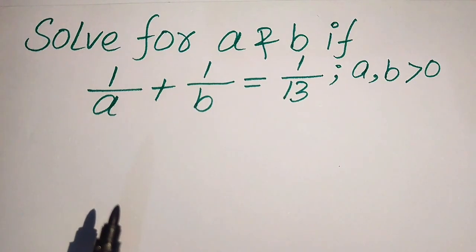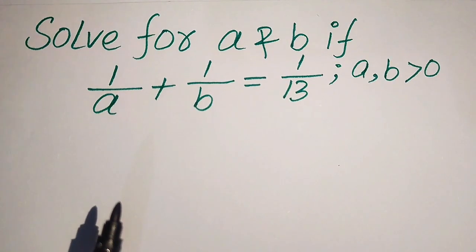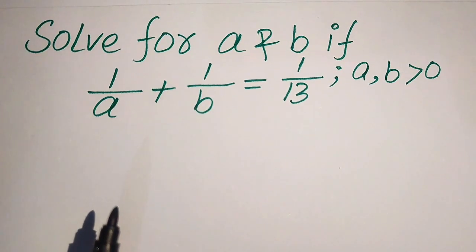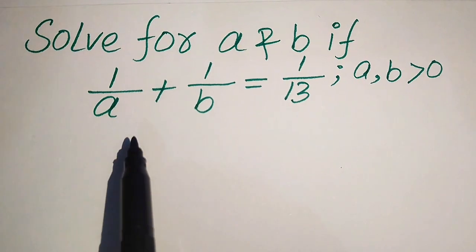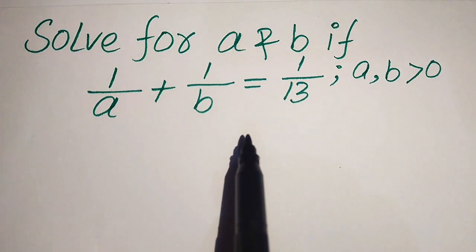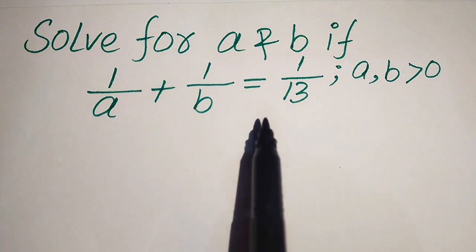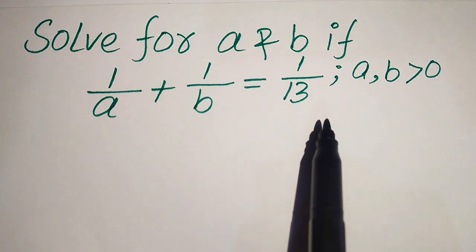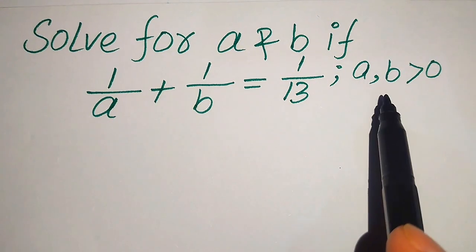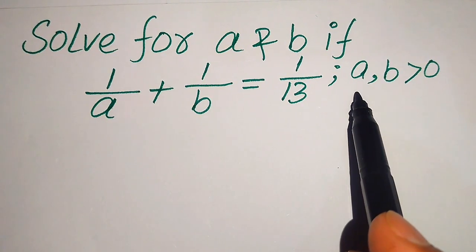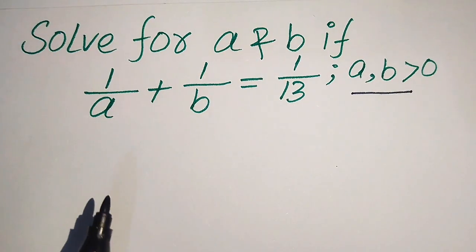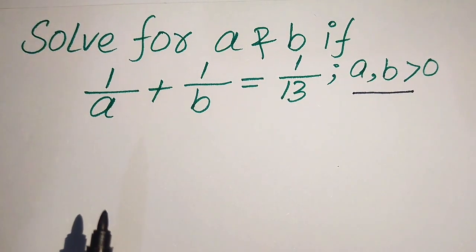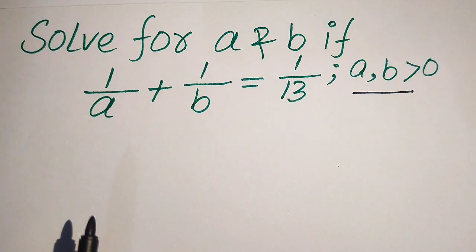Hello everyone. Today I want to show you how to solve this problem for the values of a and b. We have 1 over a plus 1 over b equals 1 over 13, and we solve for the values of a and b. Remember that a and b must be positive numbers, so we find positive values of a and b.